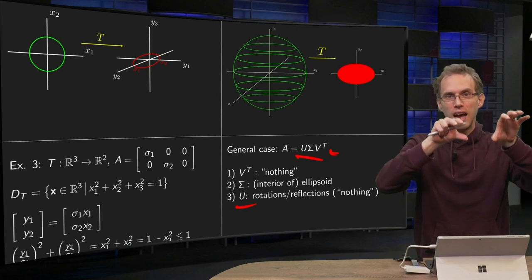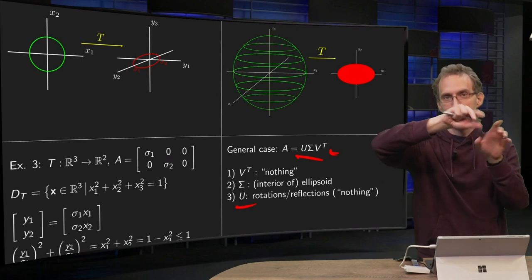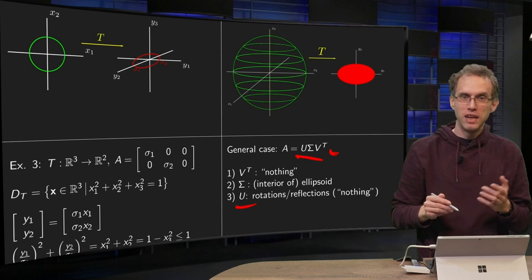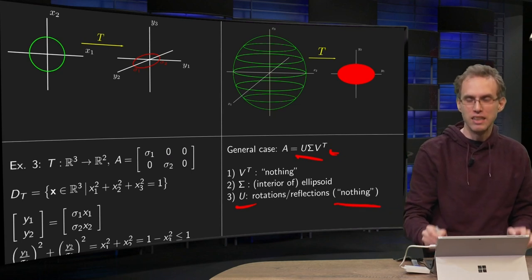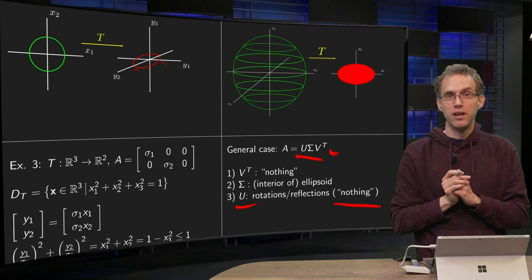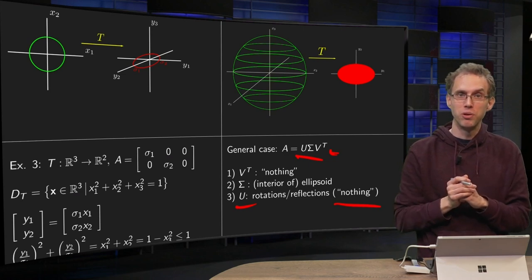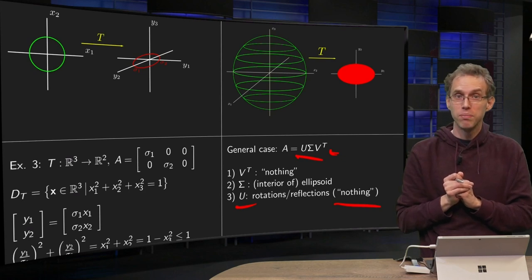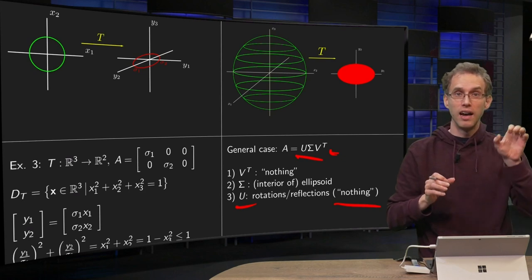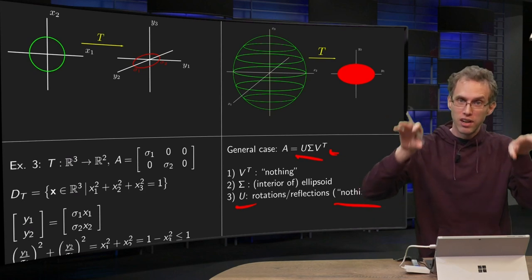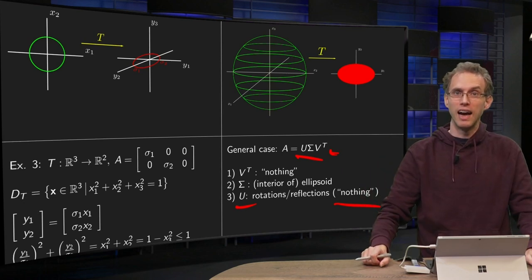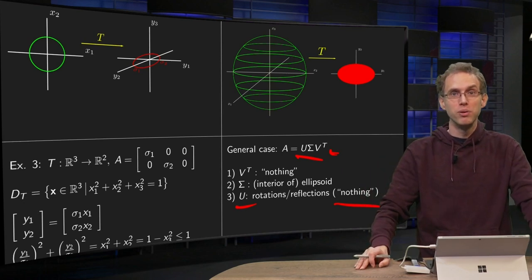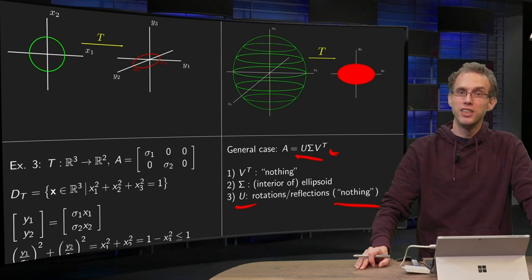So instead of an ellipse, you get a rotated ellipse, but still an ellipse. So basically your U is also doing kind of nothing. So what is the singular value decomposition doing geometrically? The main information is in what your sigma matrix is doing and the U and the V matrices around it are just rotating axes. This is how you can view your singular value decomposition geometrically.